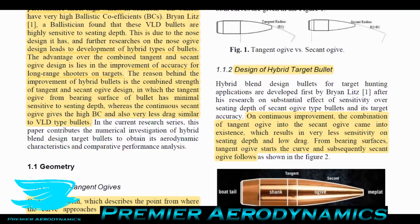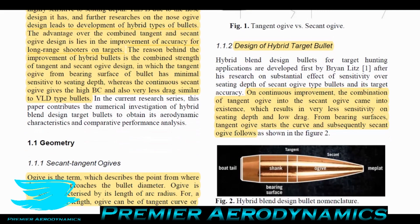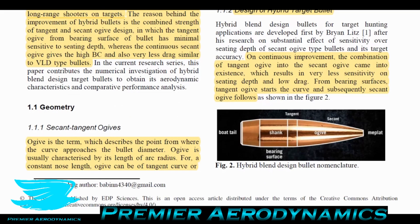The combination of tangent ogive into the secant ogive resulted in less sensitivity to seating depth and lower drag. For bearing surfaces, tangent ogive starts the curve and subsequently the secant ogive follows it. From the straight part of the bullet, you start with a tangent radius then follow into the secant radius. It's fairly continuous so you don't get a bump, it's still fairly smooth. You transition to the secant radius before the tangent radius gets too narrow.